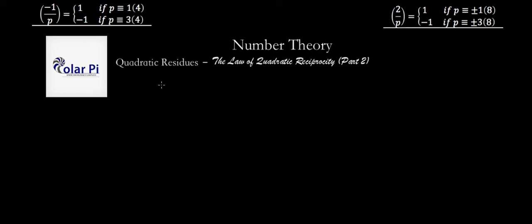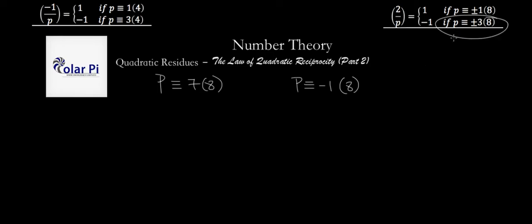The first of the two notes is pretty straightforward. It's about recognizing that saying that P is congruent to 7 mod 8 is the same thing as saying that P is congruent to negative 1 mod 8. That's because mod 8, the number 7 is the same as the number negative 1. And so this is saying that P is either congruent to 3 mod 8 or P is congruent to 5 mod 8, because the number 5 is the same as negative 3 mod 8.